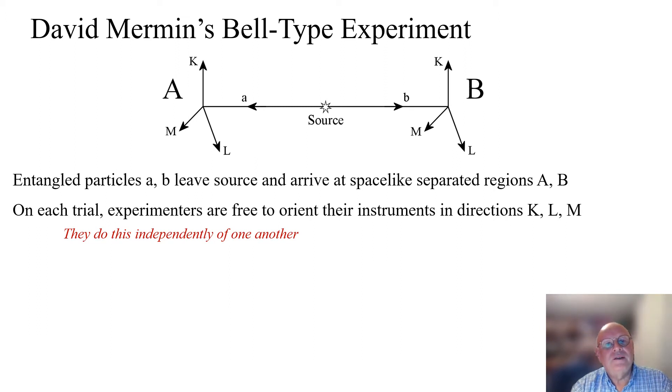Here is David Mermin's very simple Bell-type experiment. Entangled particles A and B leave the source and arrive at space-like separated regions big A and big B. At each trial, the experimenters are free to orient their instruments in directions K, L, or M, and they do this independently of one another.